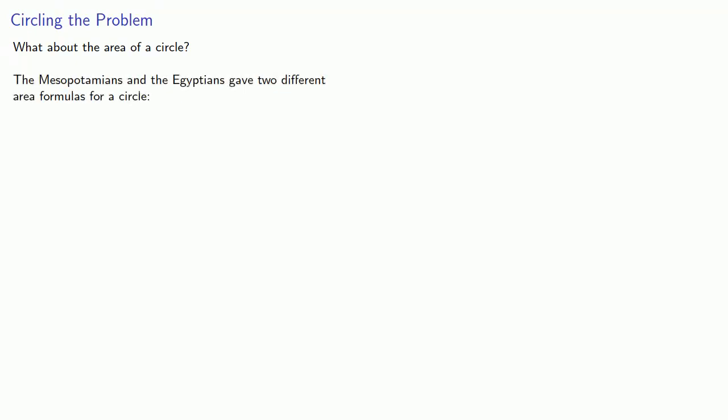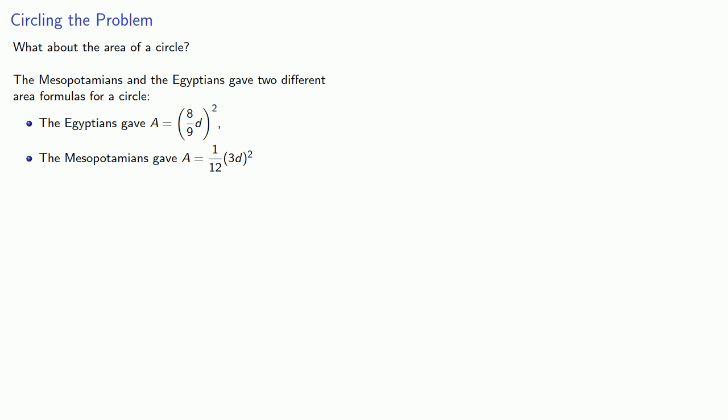Both the Mesopotamians and the Egyptians gave two different area formulas for a circle. The Egyptians gave a formula that we can read as 8/9 the diameter squared, and the Mesopotamians gave a different formula, 1/12 of the square of three times the diameter. As we noted earlier, the fact that they don't give the same area might have led to the creation of deductive geometry.